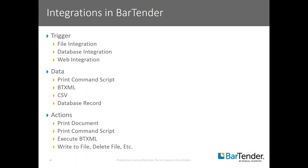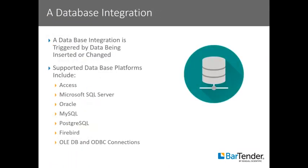Today specifically, we'll be building an integration with a database trigger. The data will be the database record set, and the action that we execute is going to be to print the document. In general, an integration waits for an event and in response to that event, specified actions are executed. A database integration is triggered by data being inserted or changed in a database. Specifically in Bartender's case, the integration service runs the pre-configured actions when that data change occurs.